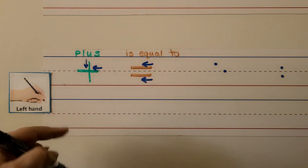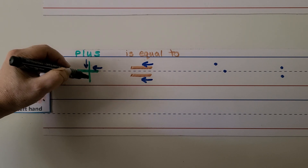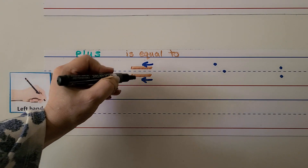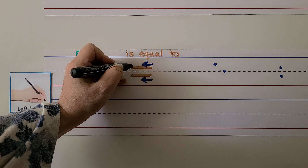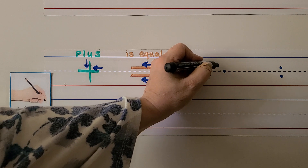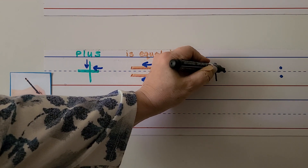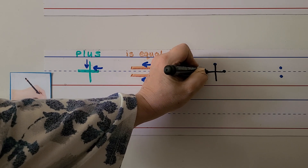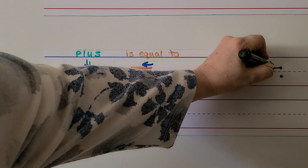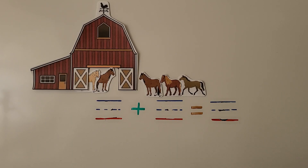We can make a plus sign with our left hand for left-handed students. We start here and come down, then go on this side and pull the pencil towards our hand. We can make the is equal to symbol: we start here and pull towards our hand, and then underneath the dotted line, we pull towards our hand again. To make the plus sign, we start here, come down but don't touch the bottom, then go on this side and pull towards our hand.